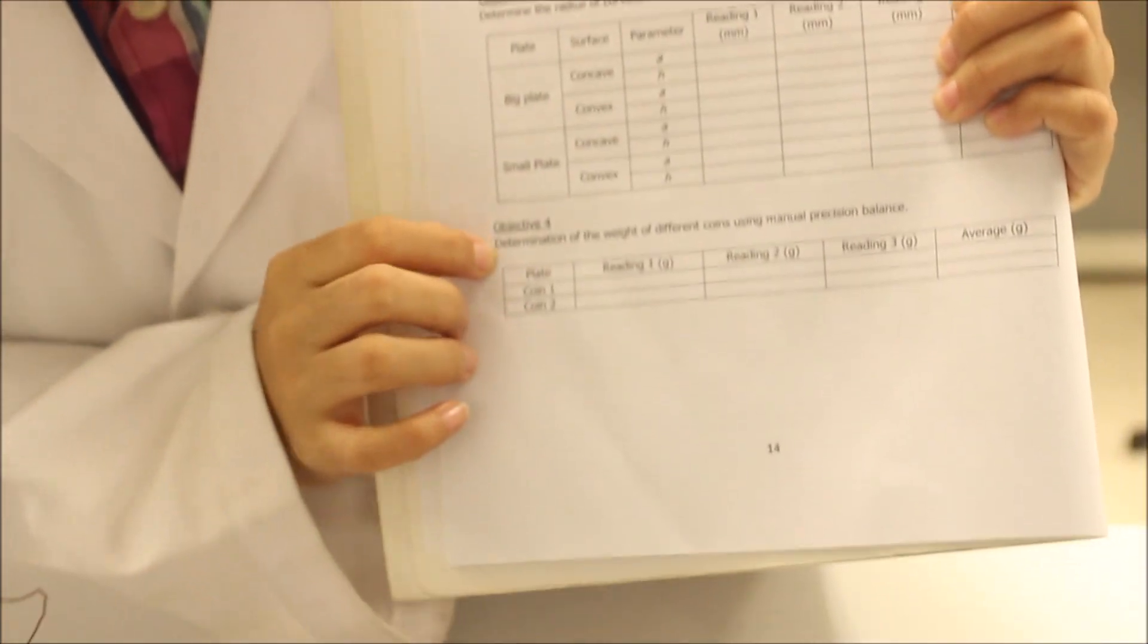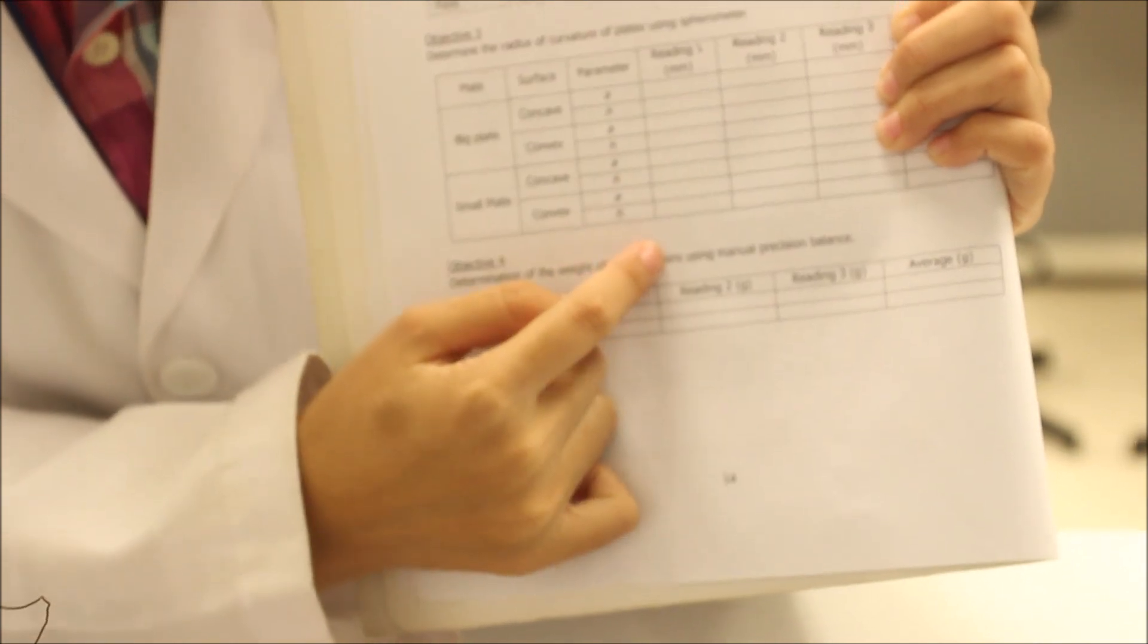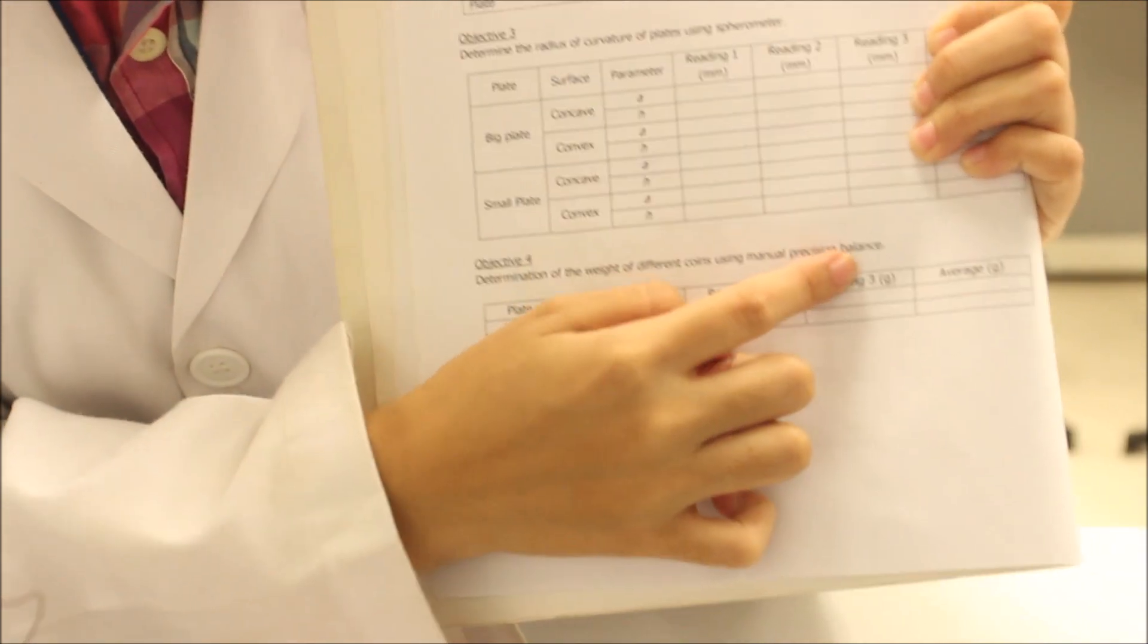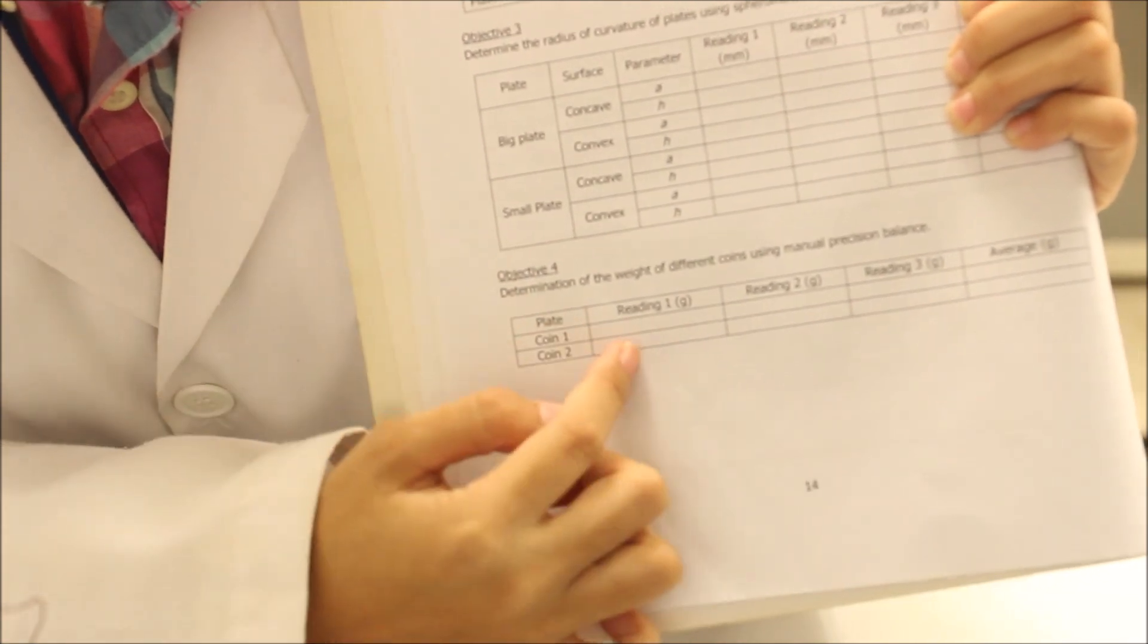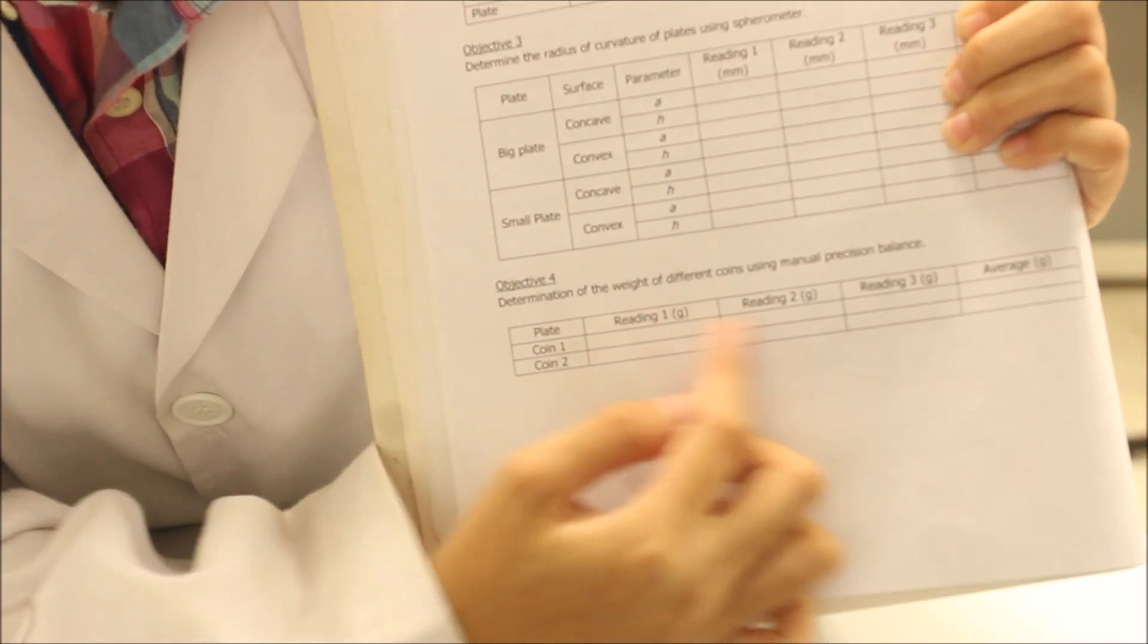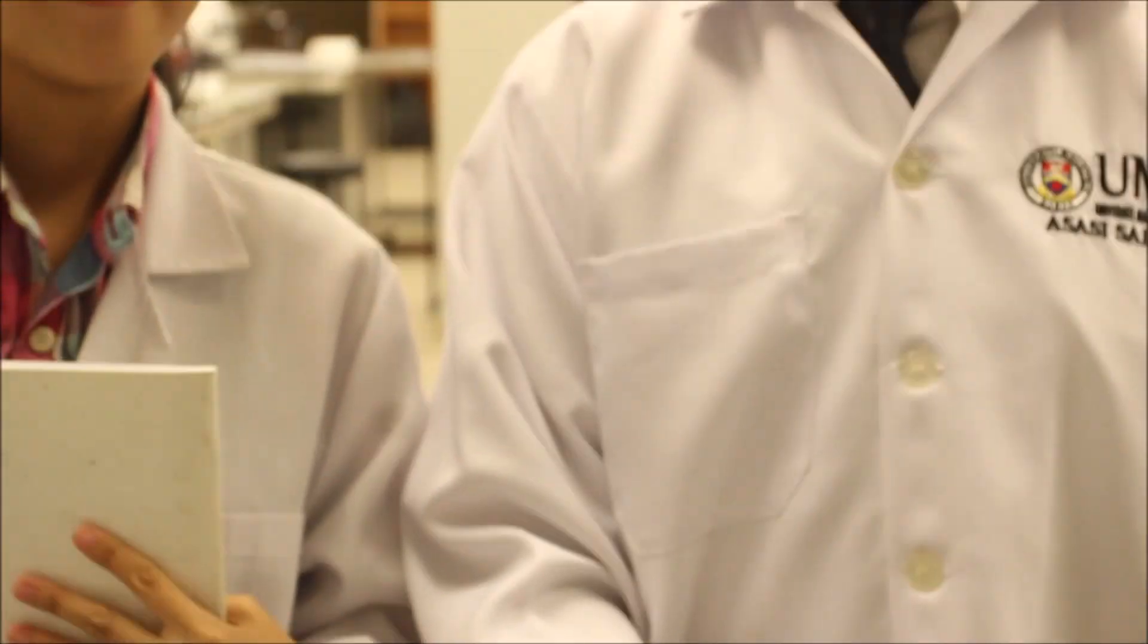And then the last one, the fourth objective is the weight of coins using manual precision balance with 2 types of coins, then take 3 readings of mass in grams and then finally take the average. Have fun experimenting. I'm Seizuddin. And I'm Miss Flo. Thank you. Bye.